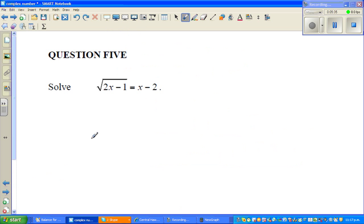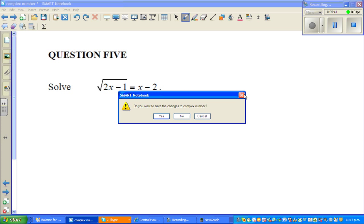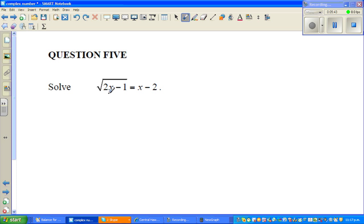Let me do one more question: square root of 2x minus 1 is equal to x minus 2. I'm going to square both sides, so square root of 2x minus 1 squared is equal to x minus 2 squared. The square root will be removed, so you've got 2x minus 1 is equal to...